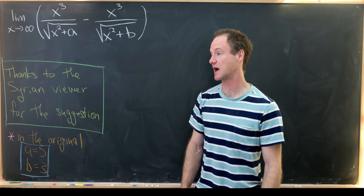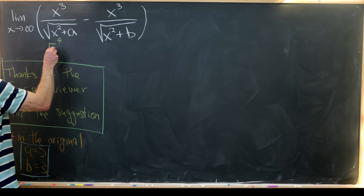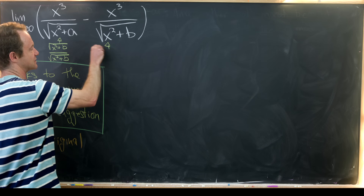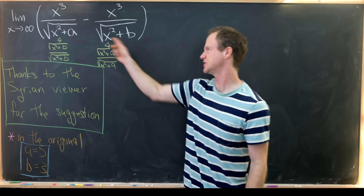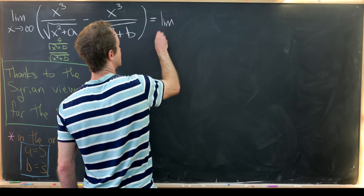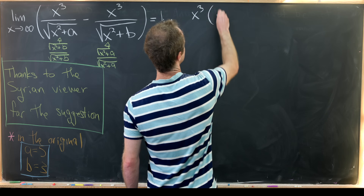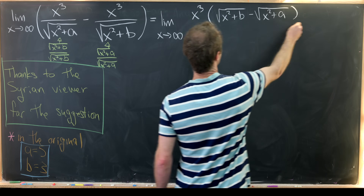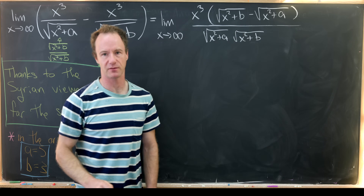What we'll do is multiply each term by something to give us a common denominator. For the first term we multiply by the square root of x squared plus b over itself, and for the second term we multiply by the square root of x squared plus a over itself. The common denominator will be the product of those two denominators. That leaves us with the limit as x approaches infinity of x cubed times the square root of x squared plus b minus the square root of x squared plus a, all over the square root of x squared plus a times the square root of x squared plus b.